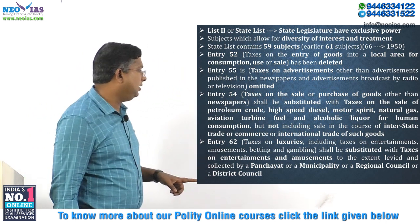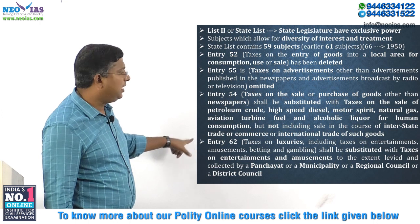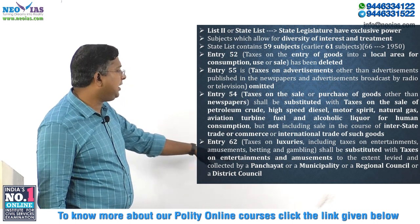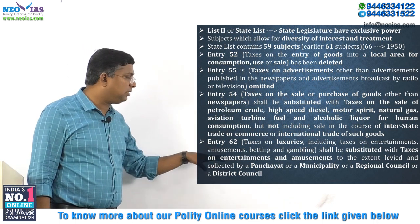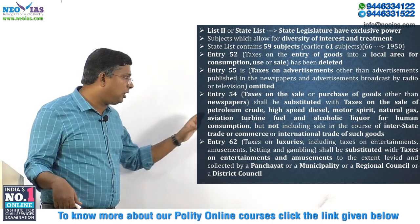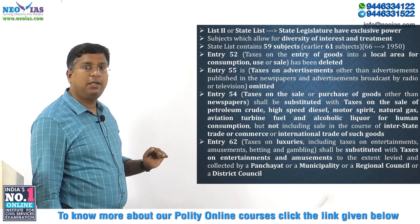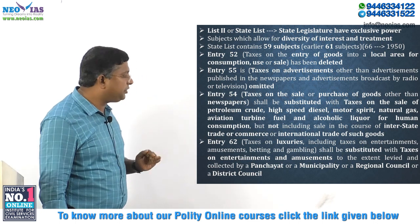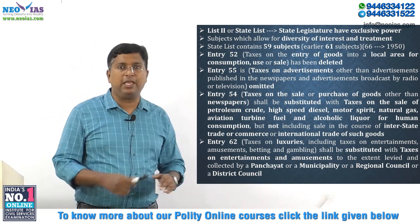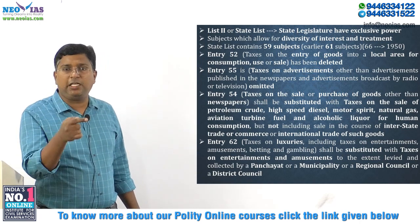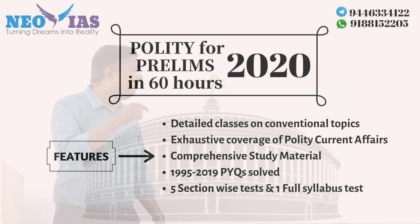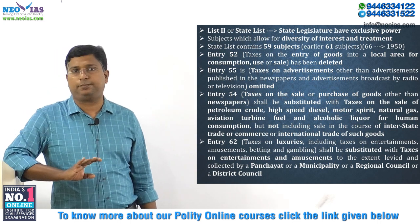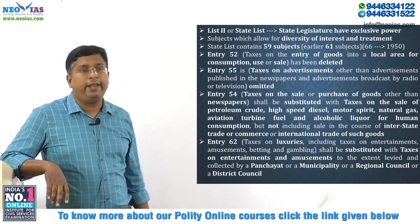Entry 62 has also been amended. Earlier it read: 'Luxury tax, that is, tax on luxuries including tax on entertainment, amusement, betting and gambling.' Now luxury tax is subsumed under GST. Entry 62 now reads: 'Taxes on entertainment and amusement to the extent levied and collected by a panchayat, municipality, regional council, or district council.' So if any such local body imposes taxes on entertainment or amusement, that is allowed, but the state cannot impose such tax.